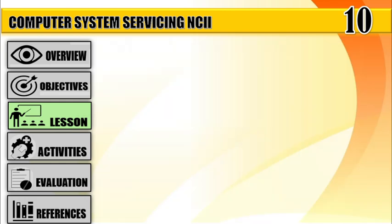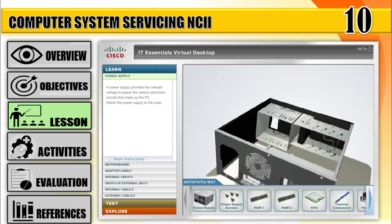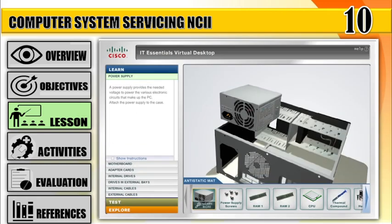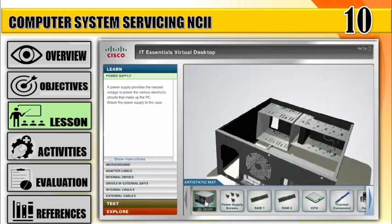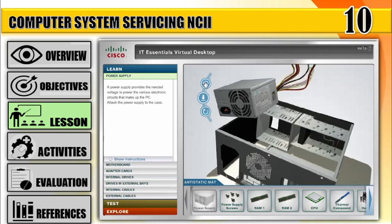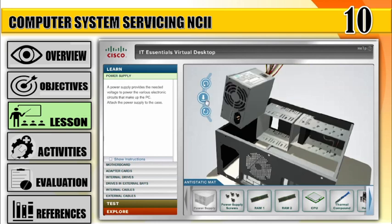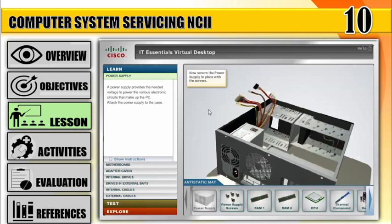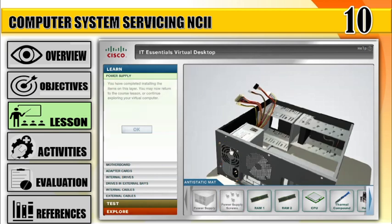How to assemble a desktop PC using Cisco IT Essentials Virtual Desktop. Step 1: Connect the power supply. A power supply provides the needed voltage to power the various electronic circuits that make up the PC. Install power supply: Number 1, move the power supply to the case. Number 2, align the holes in the power supply with the holes in the case. Number 3, secure the power supply to the case using the proper screws.